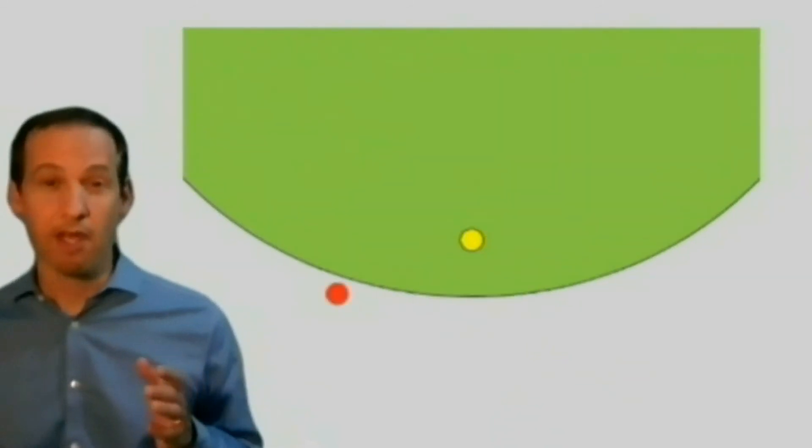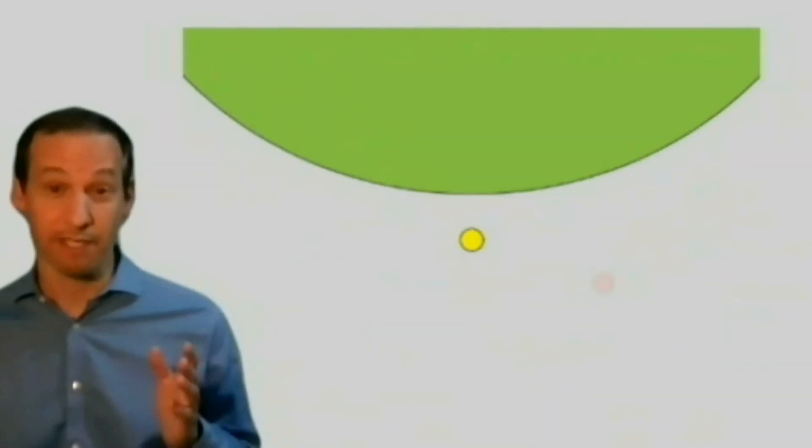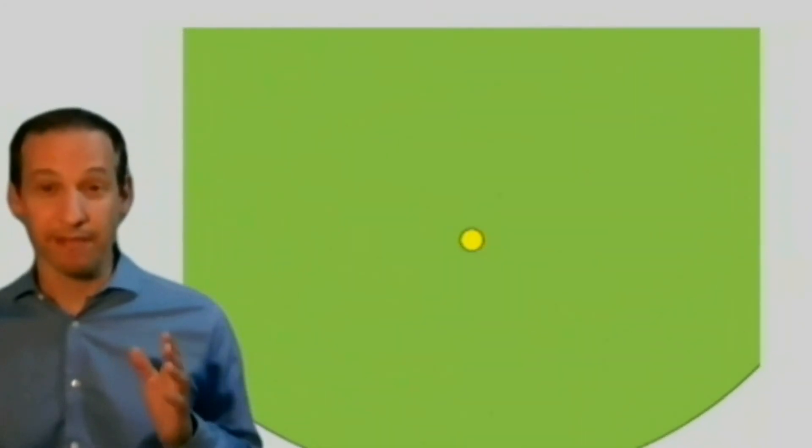While the yellow central fixation target is visible through the green filter, the red test stimuli are completely filtered out and therefore invisible to the non-tested eye. Thus the non-tested eye is able to fixate on the central target but only the tested eye can appreciate the test stimuli.